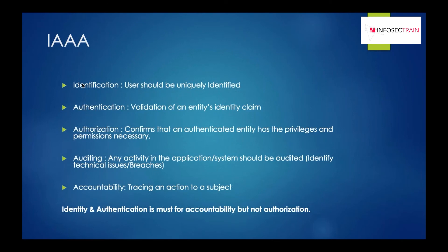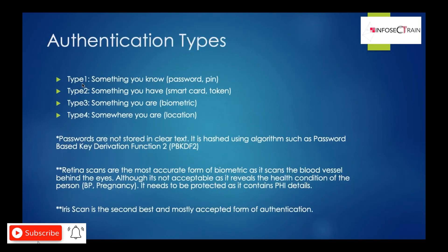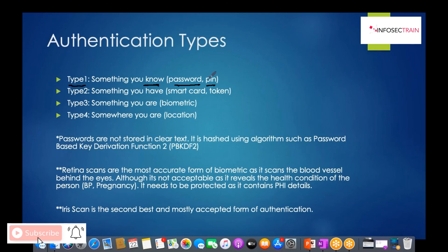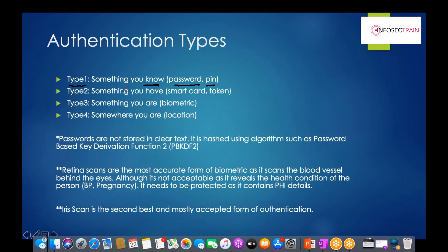Now we discuss multi-factor authentication and types of authentication — also called factors of authentication. Type 1 is something you know: things you can remember, such as a password, PIN, pattern, or passphrase — anything for which you possess knowledge. Type 2 is something you have: a physical device you're carrying, like a smart card or token.